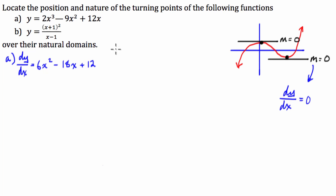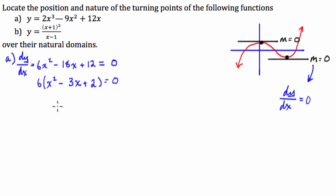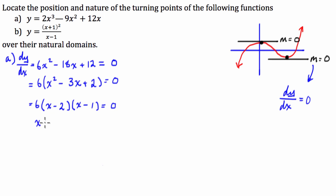We've got to figure out when this is equal to zero. If we're not given a calculator with solving ability, we're going to have to do a little bit of algebra. First of all, we're going to factorize this whole thing by 6, and then factorize the monic quadratic inside the brackets. That gives us 6 times (x minus 2)(x minus 1) equals 0. Using the null factor law, x equals 2 or x equals 1.